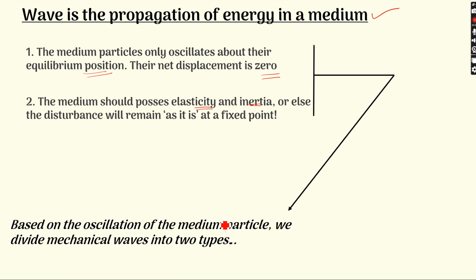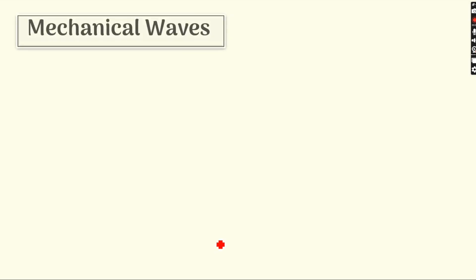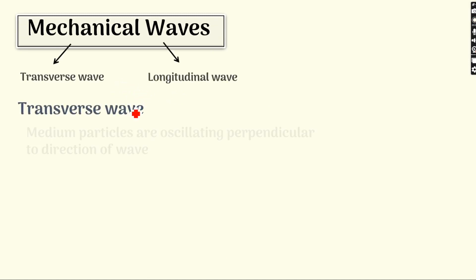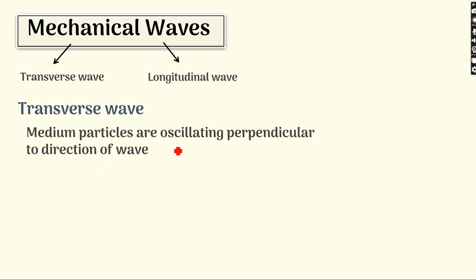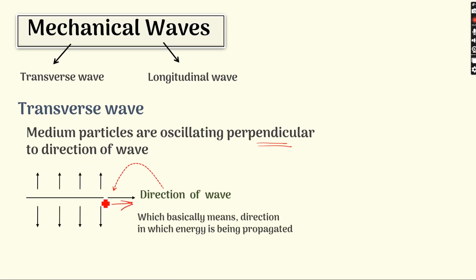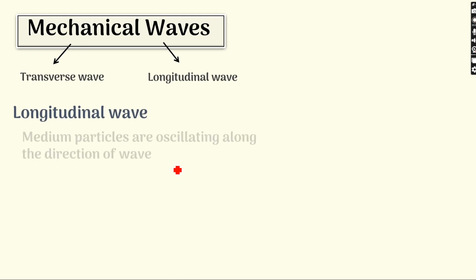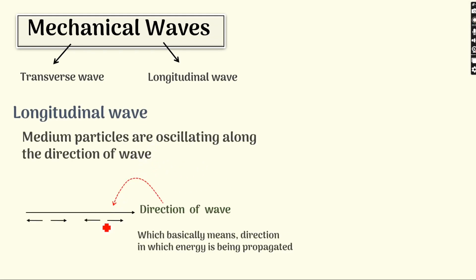Based on the oscillation of the medium particles, we divide mechanical waves into two types: transverse waves and longitudinal waves. In a transverse wave, the medium particles oscillate perpendicular to the direction of propagation. Suppose the wave is traveling in one direction and this particle vibrates up and down — it is vibrating perpendicular to the direction of wave propagation. In a longitudinal wave, the particles of the medium vibrate parallel — in the same direction as the propagation of the wave. As the wave propagates horizontally, the particle vibrates to and fro horizontally as well, so they are parallel to each other.